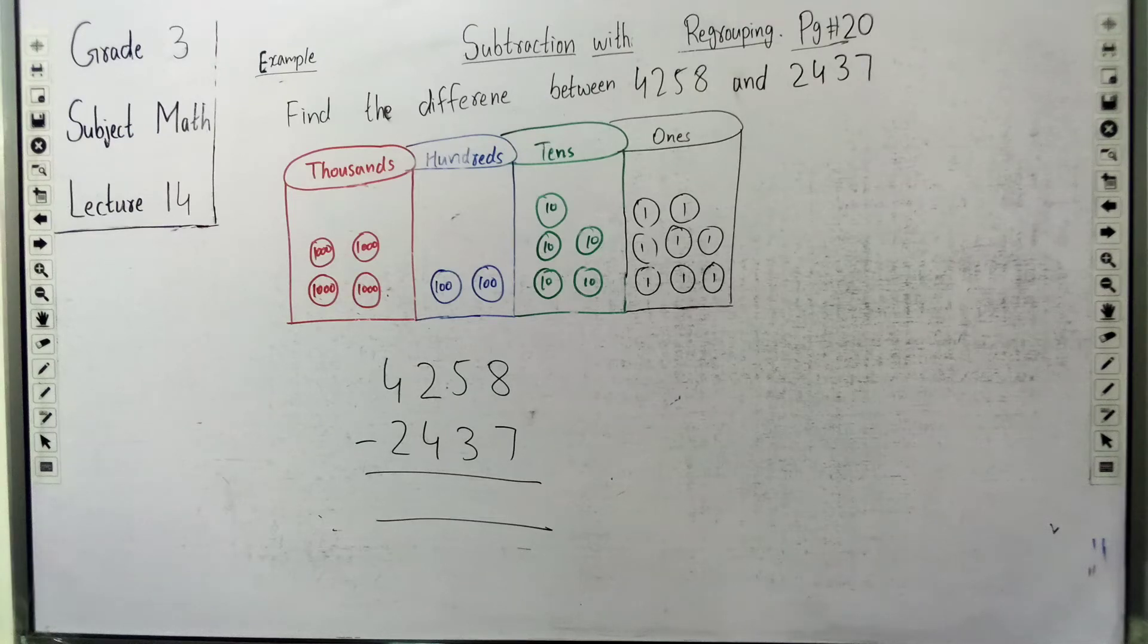Assalamualaikum grade 3. Today we are going to start lecture number 14. Today's topic is subtraction with regrouping on page number 20. So let's start our topic. Our example is: Find the difference between 4,258 and 2,437.